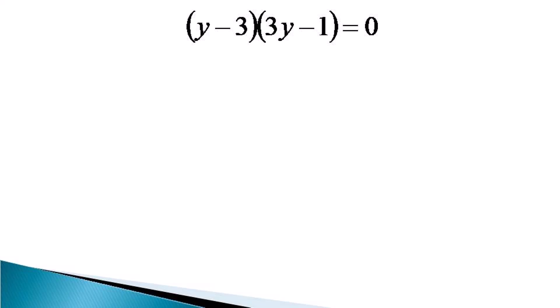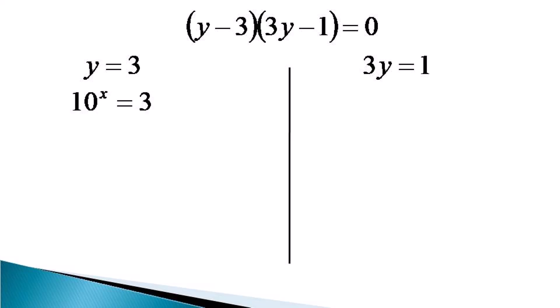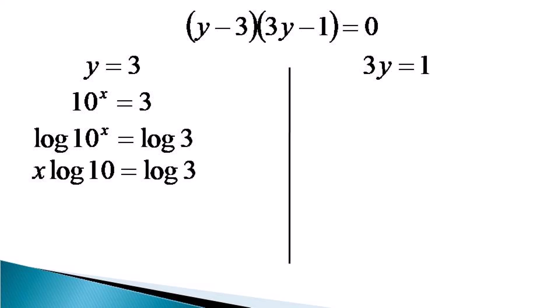So this gives us two solutions. First is y is equal to 3 and second is 3y is equal to 1. For y is equal to 3, we substitute back the value of y as 10 raised to the power x, so it becomes 10 raised to the power x is equal to 3. Taking log of both sides, we get x log 10 is equal to log 3, or x is equal to log 3.